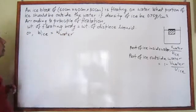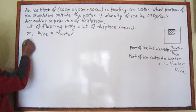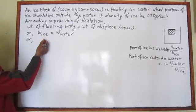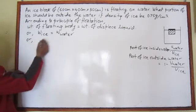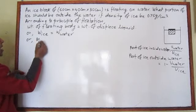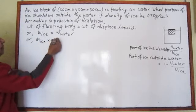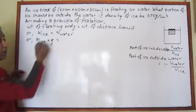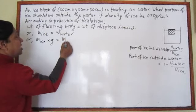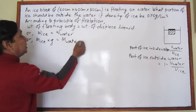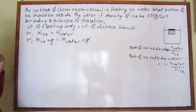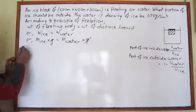Weight equals mg, meaning mass times g. So weight of ice equals mass of ice times g, and weight of displaced water equals mass of displaced water times g. The g cancels from both sides. Since mass of ice is not directly given, we proceed by substituting using density.